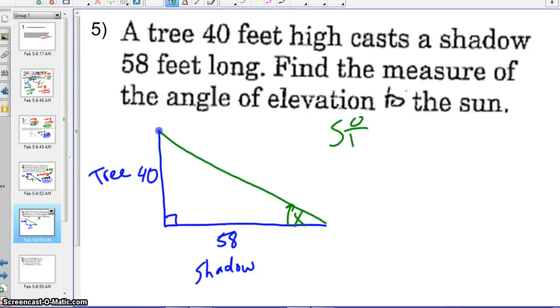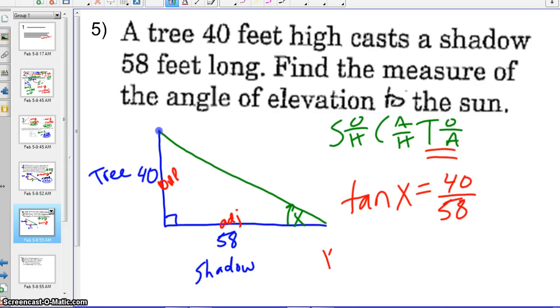So again, looking at which trig function we're actually talking about, we need to look at the fact that we have the adjacent and the opposite, which means we're talking about the tangent. Tangent of the angle measure we don't know is x, 40 over 58. Now, in order to solve for x, we need to take the inverse tangent of each side. And when we type that into our calculator, we are going to get an angle measure of 34.59, which is approximately 35 degrees.